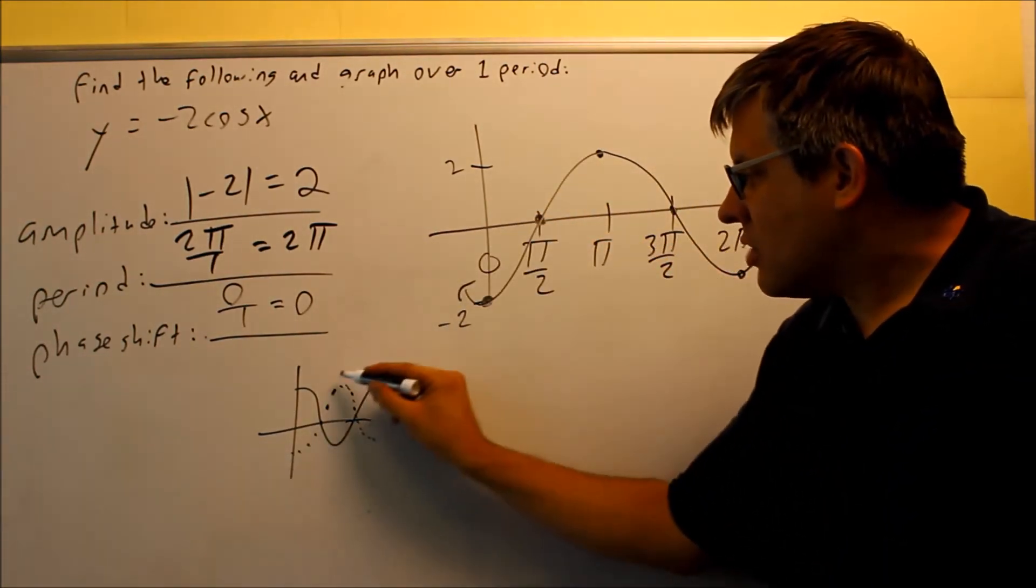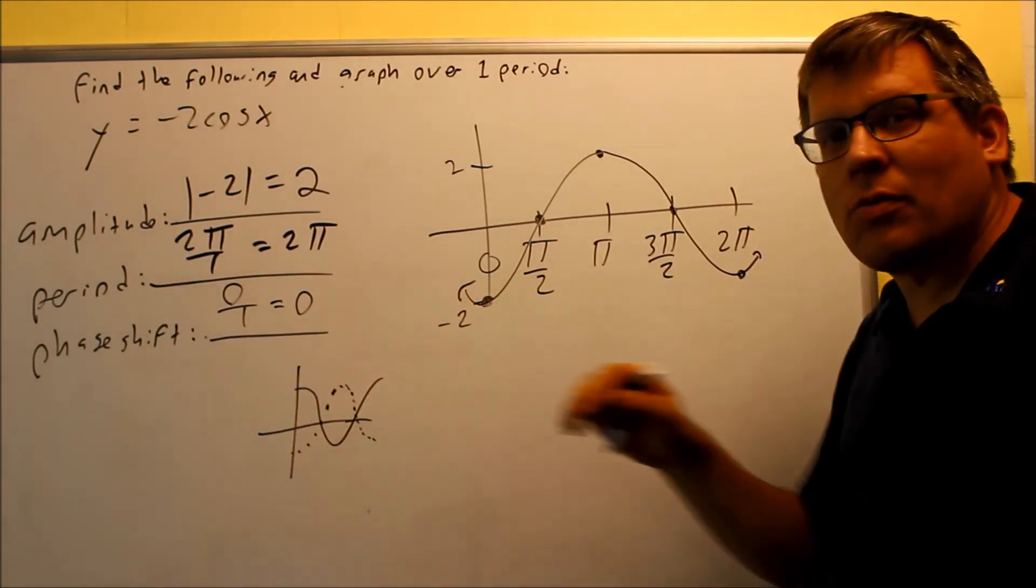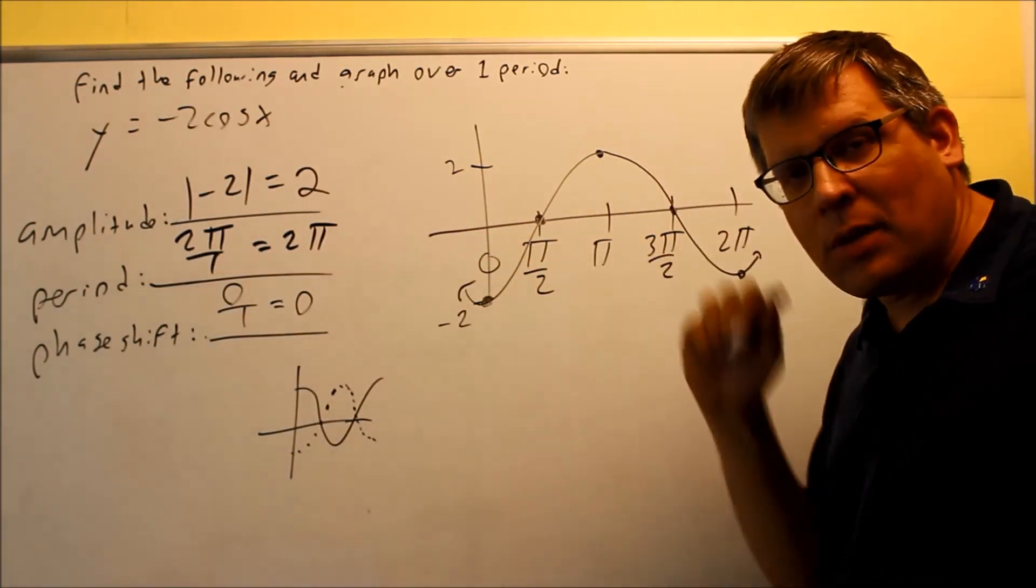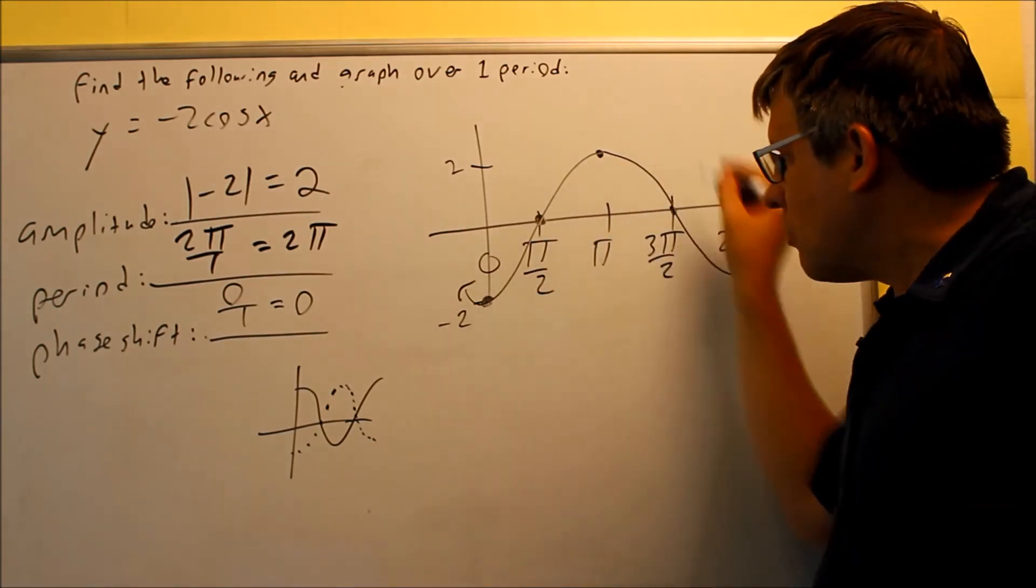Okay, again, it matches this dotted line here because again, the graph is flipped over because of the negative. The negative is actually a flip. It's a type of transformation. So this would be your completed graph.